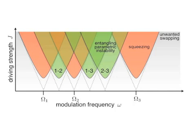Here you see a schematic diagram of the resonance regions for three vibrational modes. They are plotted against the laser modulation frequency and the driving strength. A mode is squeezed inside the red cones. The green cones correspond to entanglement creation.